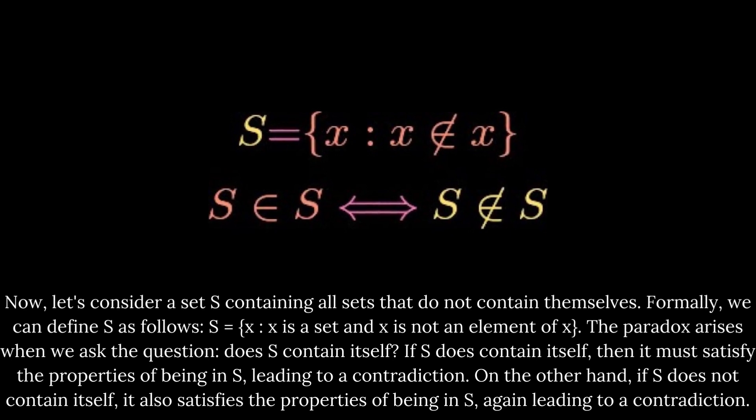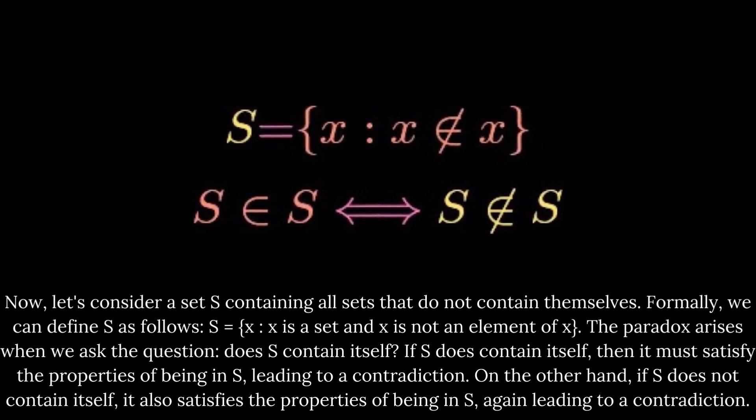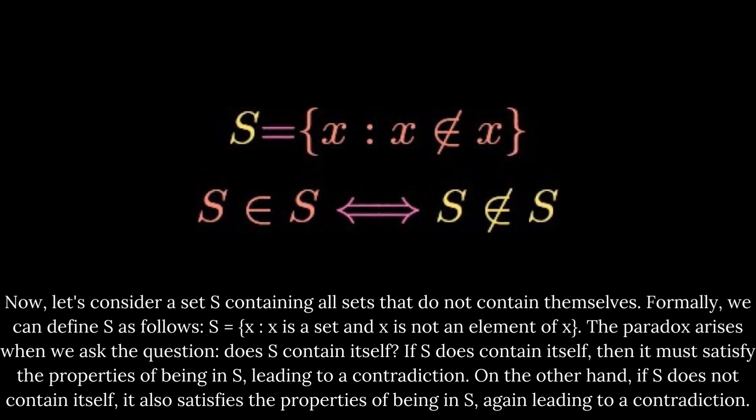Now, let's consider a set S containing all sets that do not contain themselves. Formally, we can define S as follows: S equals {X | X is a set and X is not an element of X}.